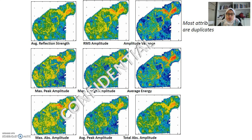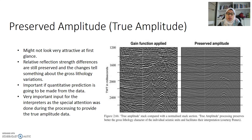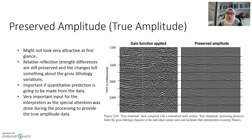Among amplitude types, the key distinction is between true amplitude, also known as preserved amplitude, and a gain-boosted version. True amplitude may not look very attractive at first — relative reflection strength differences are still preserved and changes tell us about gross lithology variation. It looks quite dim. However, we often apply a gain function in our software to boost the energy and amplitude so that reflectors are more clearly visible, which helps us interpret horizons more easily.